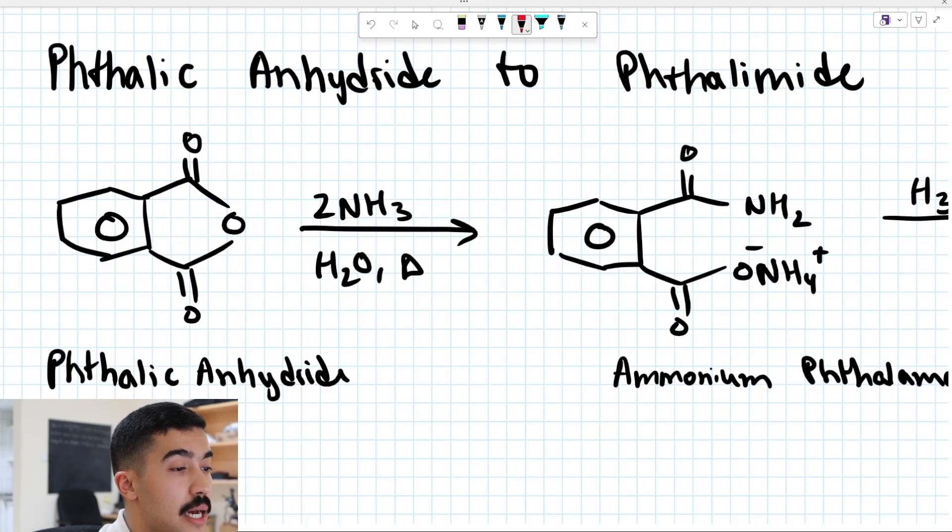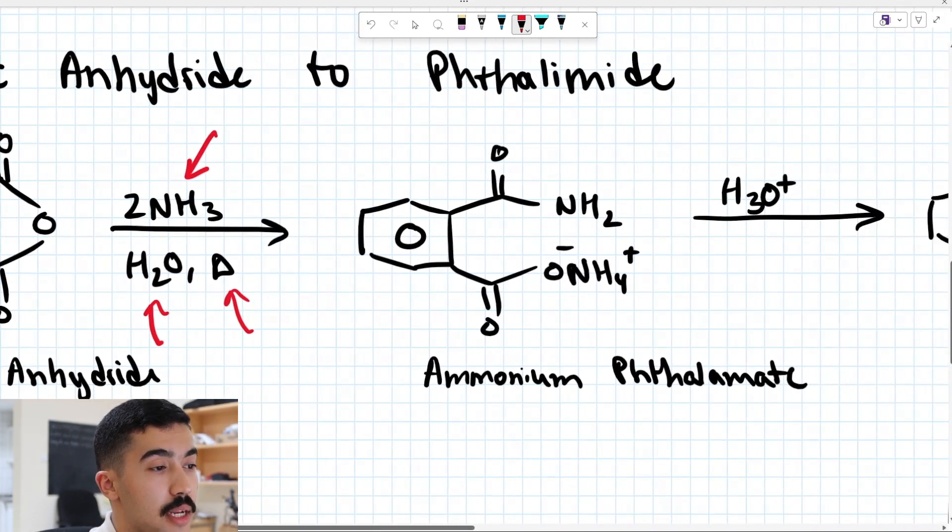Now if we want to convert phthalic anhydride to phthalimide, step one of this reaction is going to involve adding two molar equivalents of NH3, H2O, and then heat. What this will do is form our ammonium phthalimate, which looks like this.